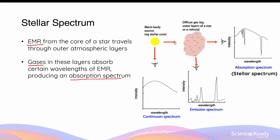By way of review from the spectroscopic video, there are three different types of spectra: a continuous spectrum, an emission spectrum, and what we'll be focusing on in this video — an absorption spectrum. This is also known as a stellar spectrum, a spectrum from stars.